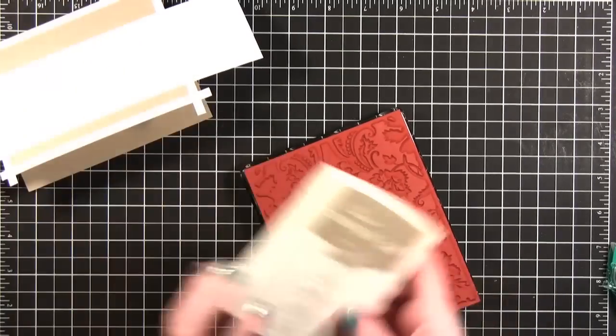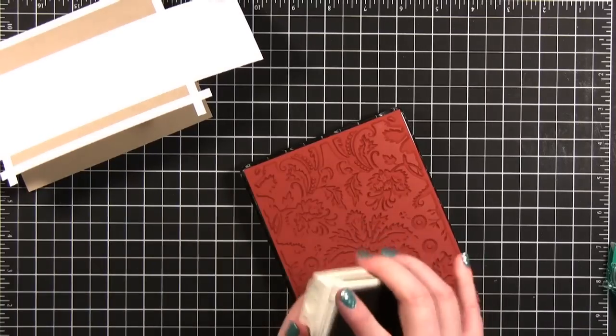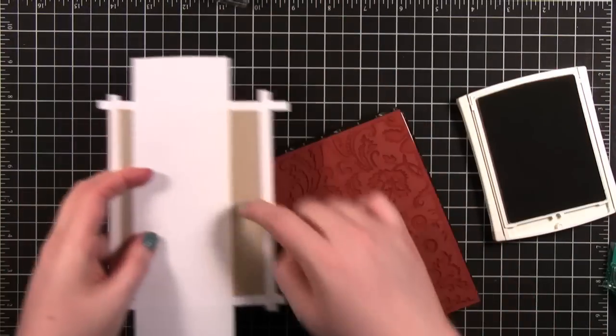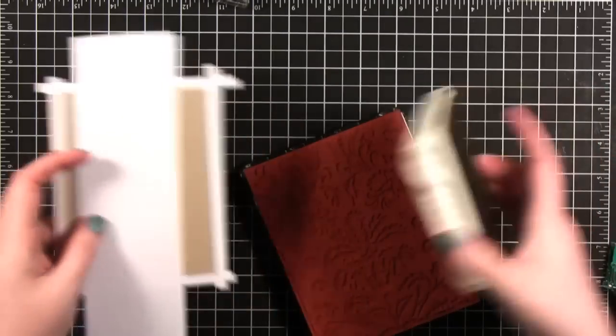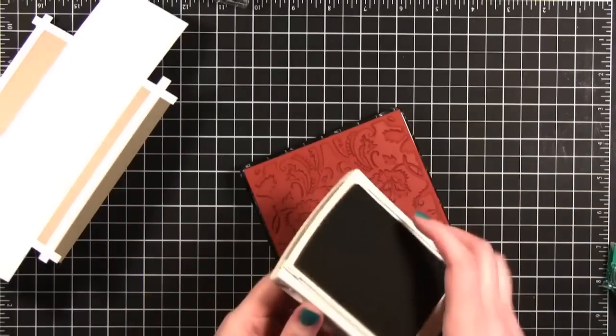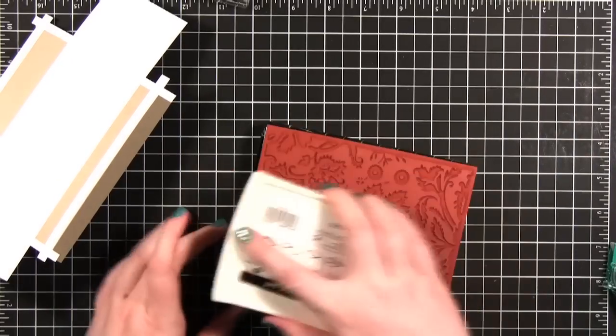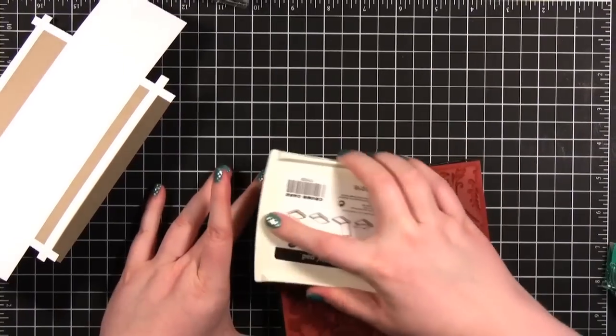I'm going to use some Crumb Cake ink from Stampin' Up. This craft color, Stampin' Up sells it under the name of Crumb Cake so this ink goes along with it. It's supposed to be the same color. It's really great for tone on tone stamping. I'm going to go ahead and ink this up.